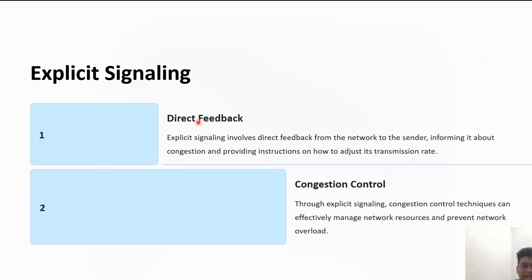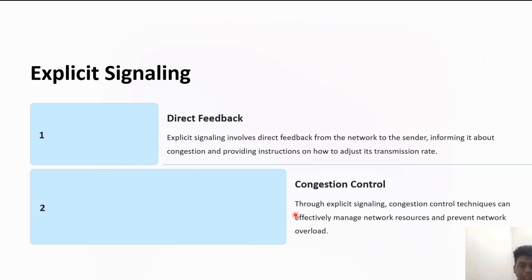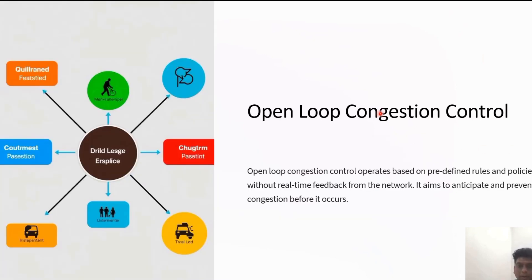The sender adjusts its transmission rate based on network conditions. Explicit signaling is based on providing direct feedback from the network to the sender, informing about the congestion so it can adjust its transmission rate and effectively manage network resources by preventing network overload. Explicit signaling is different from the choke packet method — in choke packet, a separate packet is used, but here the signal is included in the packets that carry the data.